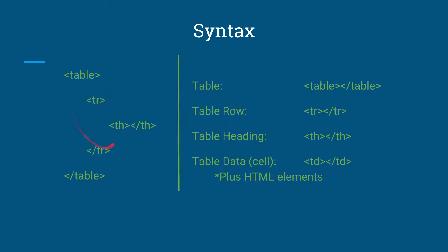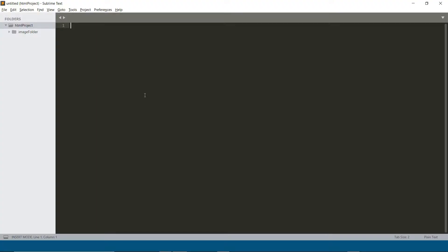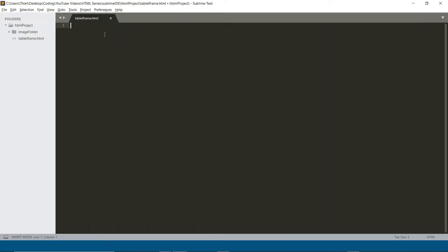What do tables look like? Inside of a table, we need a row of data to create columns, and in each column you want to have a header, and then beneath the header you would have cells of data. Each cell can hold another table or any kind of HTML element. A cell is really where you want to put most of your content, with the header defining what goes in each cell beneath it. Now let's go into the editor and start by creating an HTML file — I'm going to call this table-iframe.html — and build up our boilerplate code and call it Tables and Iframes.